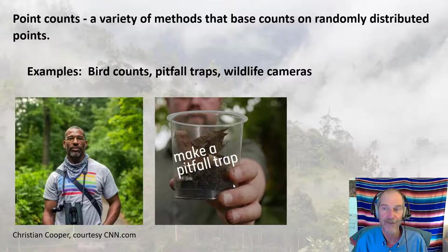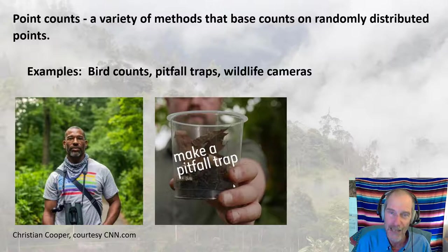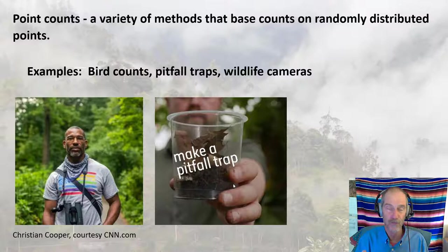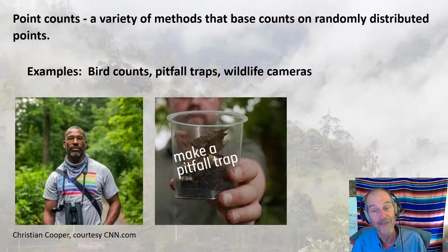For bird counts, you can't put quadrats down expecting birds to hop into them. Instead, set up randomly distributed points, go to each point, sit there, do your bird watching, and count the birds. Pitfall traps are often used for invertebrates like beetles — dig a little trap, possibly add an attractant, and count what falls in. Wildlife cameras are motion-sensitive, battery-conserving, and can illuminate with infrared light invisible to animals. These point counts probably won't give you a true population estimate — instead they give you an index of the population.